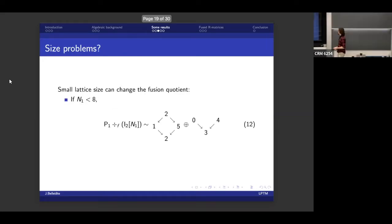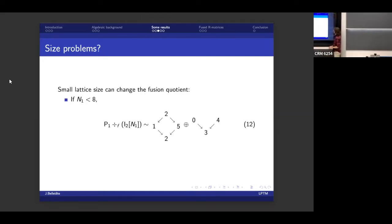But in general, the fusion quotient will have more states than the fusion product, and it has more Jordan blocks in it too. Now the fusion quotient is also very sensitive to size. So the size of the lattice can change the fusion product. In particular, if I'm trying to force a spin 2 on a chain with less than 8 sites, I instead get this thing. So in addition to my spin 0, I also have a spin 4 that is stuck here that is glued in a Jordan block with the spin 3.